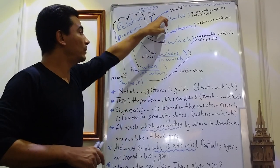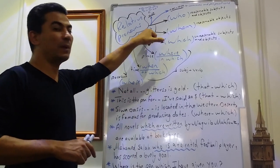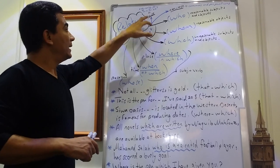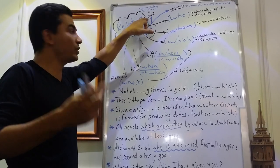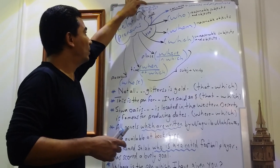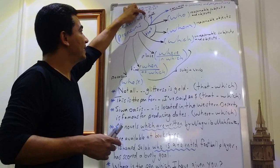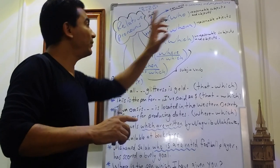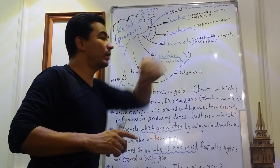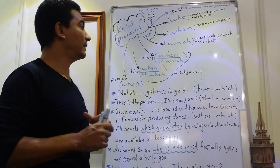Of course, who, whom, and which are replaced by that. It is a must, or we use that as the first option, if we have any, only, it is, this is, and all. But we don't use that if we have a comma or a preposition that precedes it.